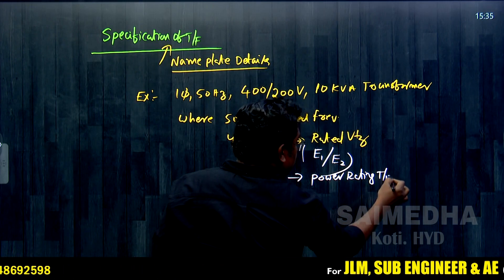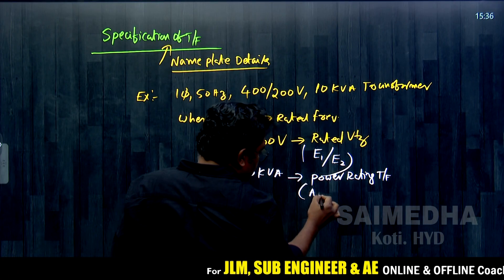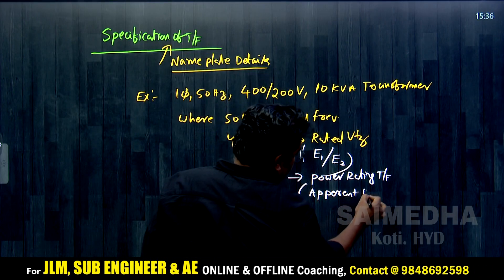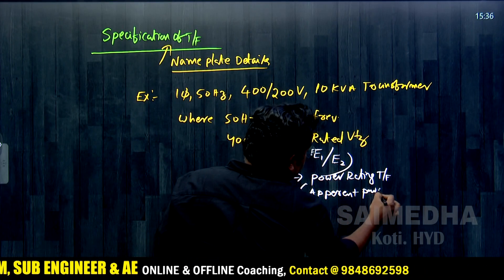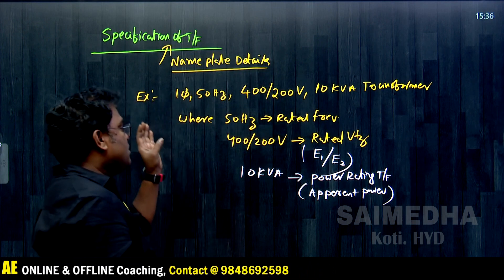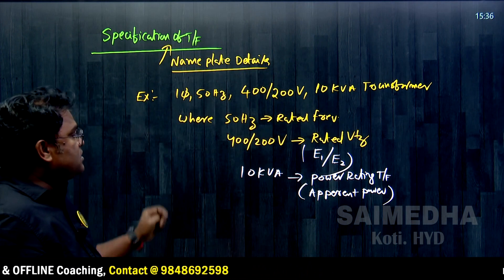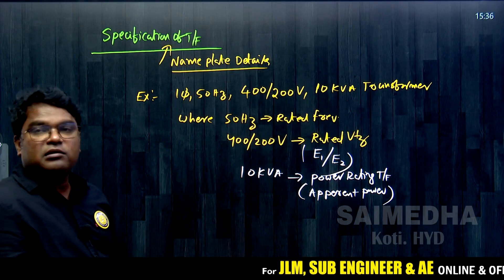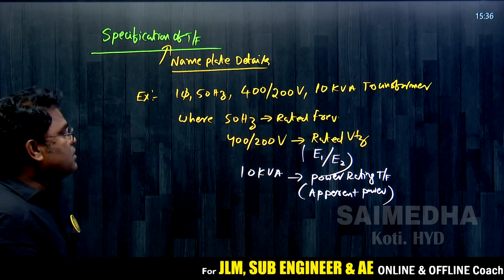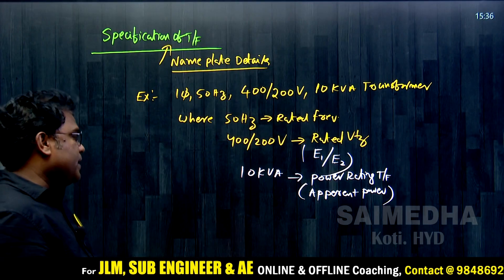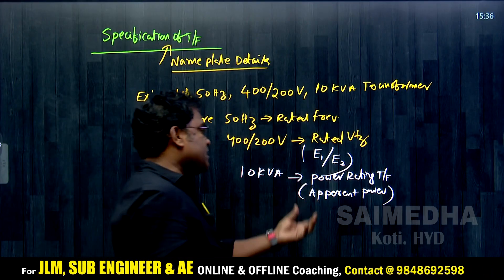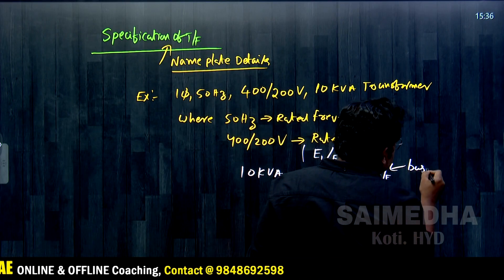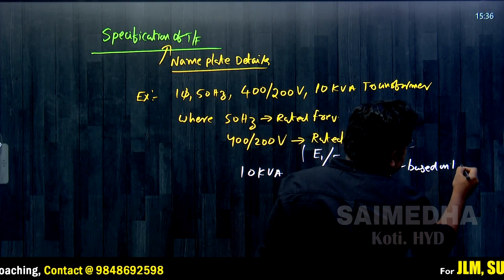The power rating of the transformer is always expressed as apparent power. So we have three ratings: rated voltage, rated frequency, and power rating — all mentioned by the manufacturer. This power rating is based on losses and the allowable temperature rise.